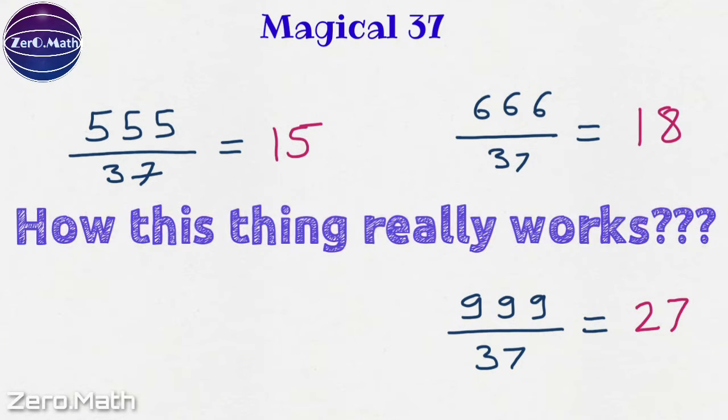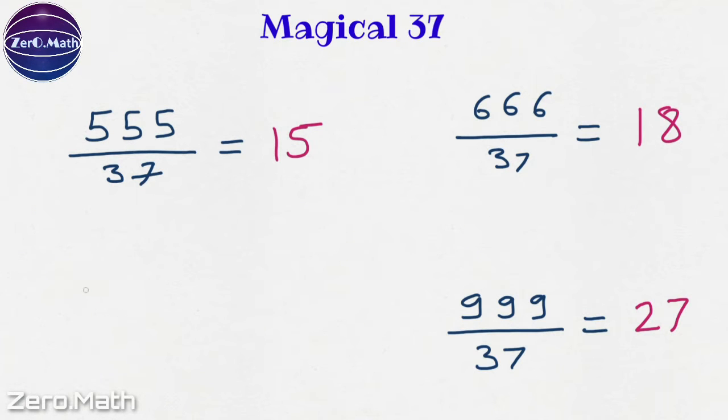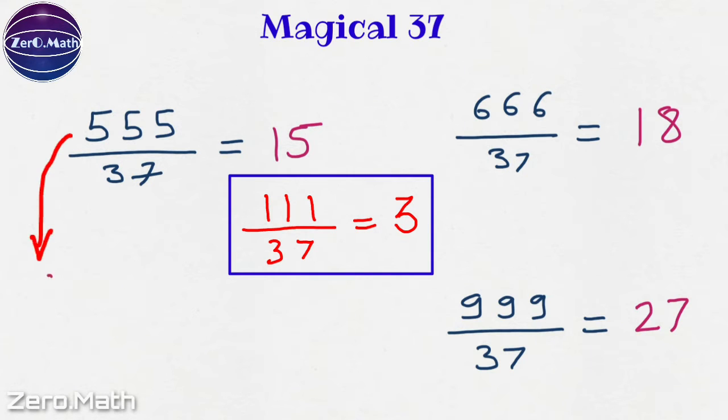Now you would wonder how this thing really works. Well, the reason behind this is very simple. So if we divide 111 by 37, we are going to get 3. So 555 by 37, we can represent it as 5 times 111 by 37.